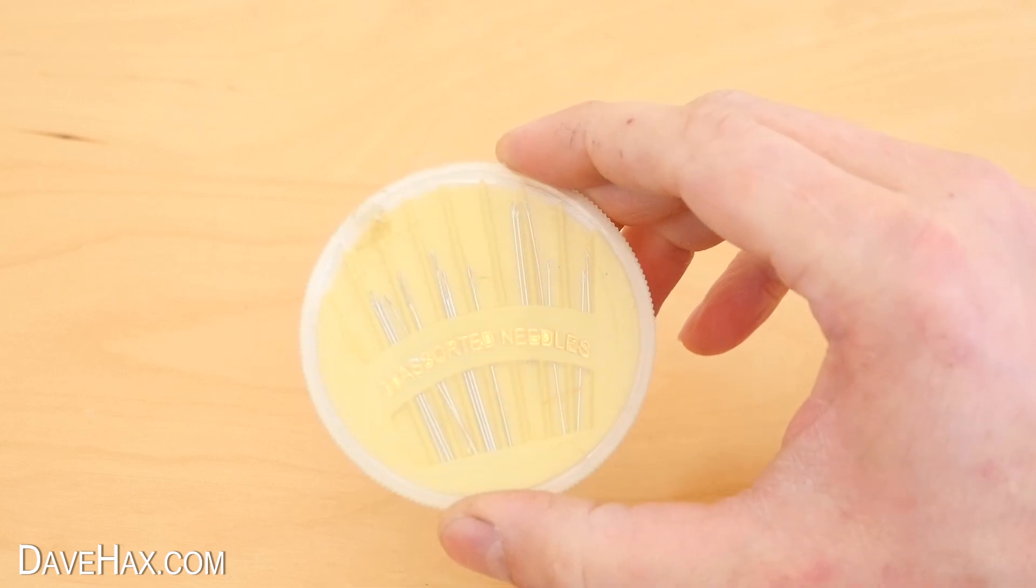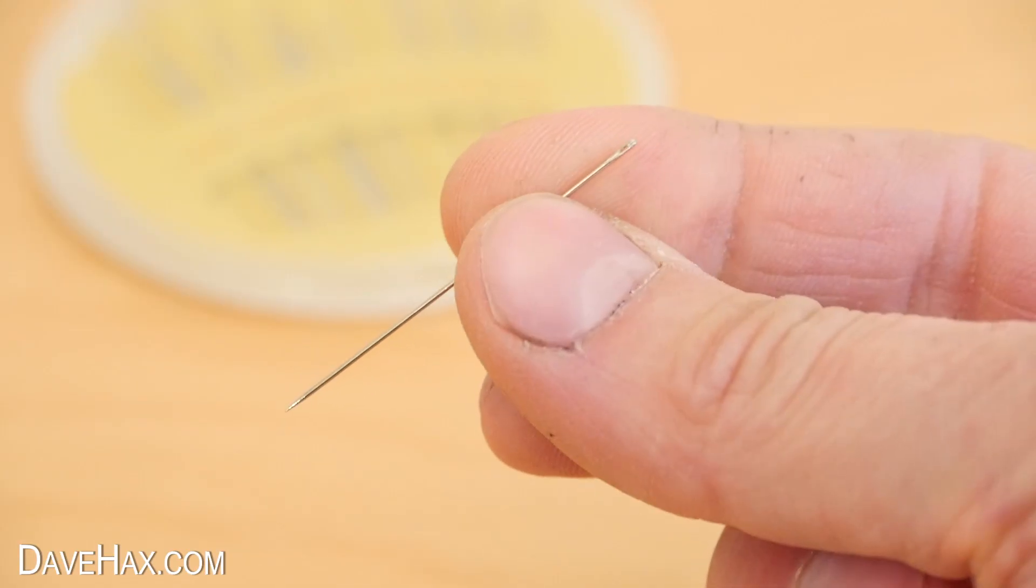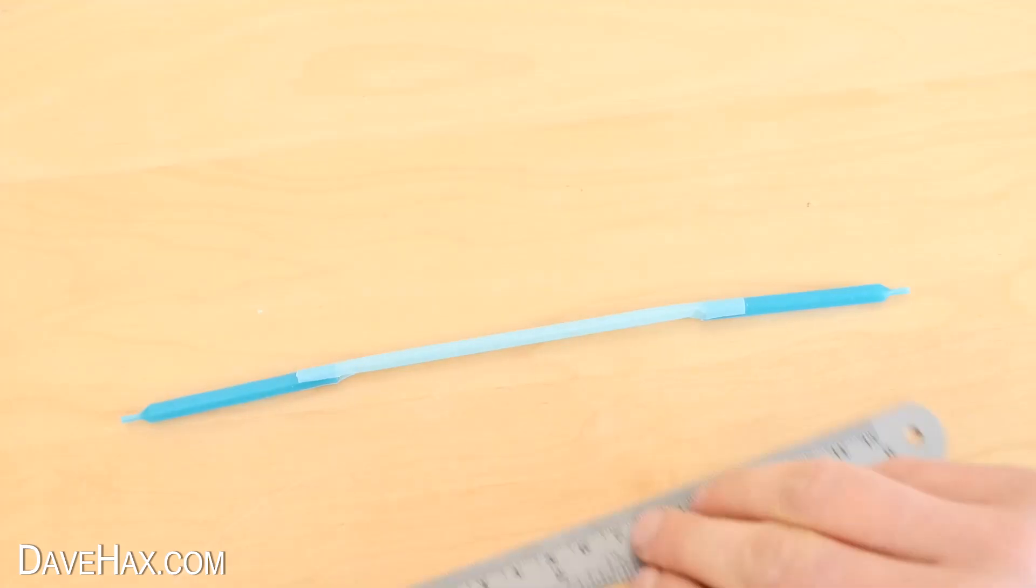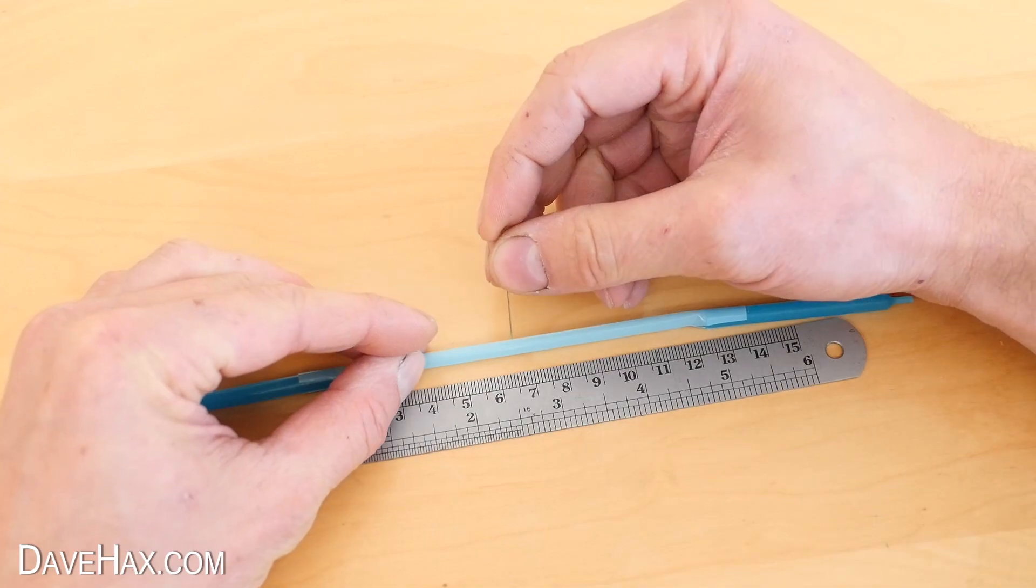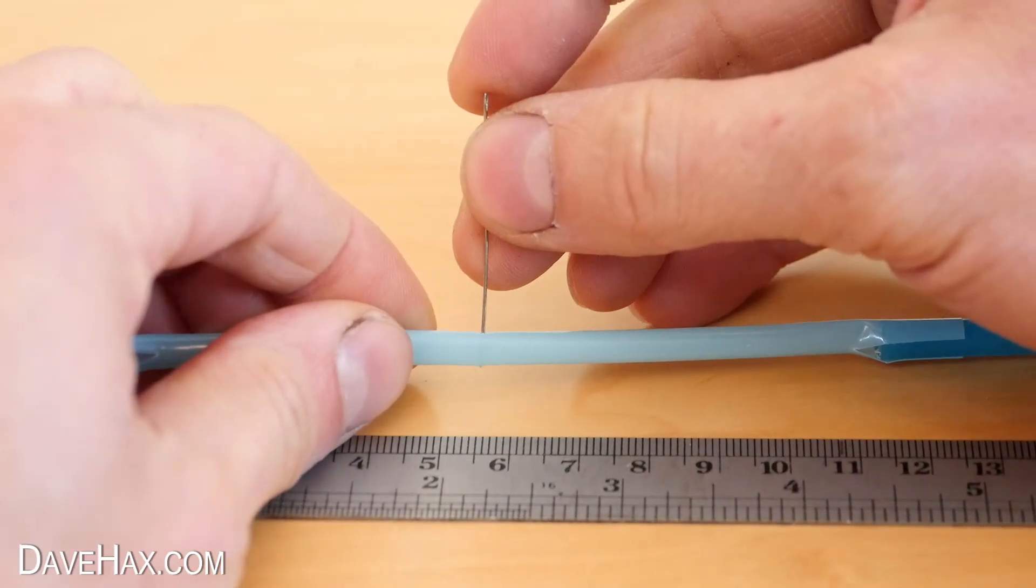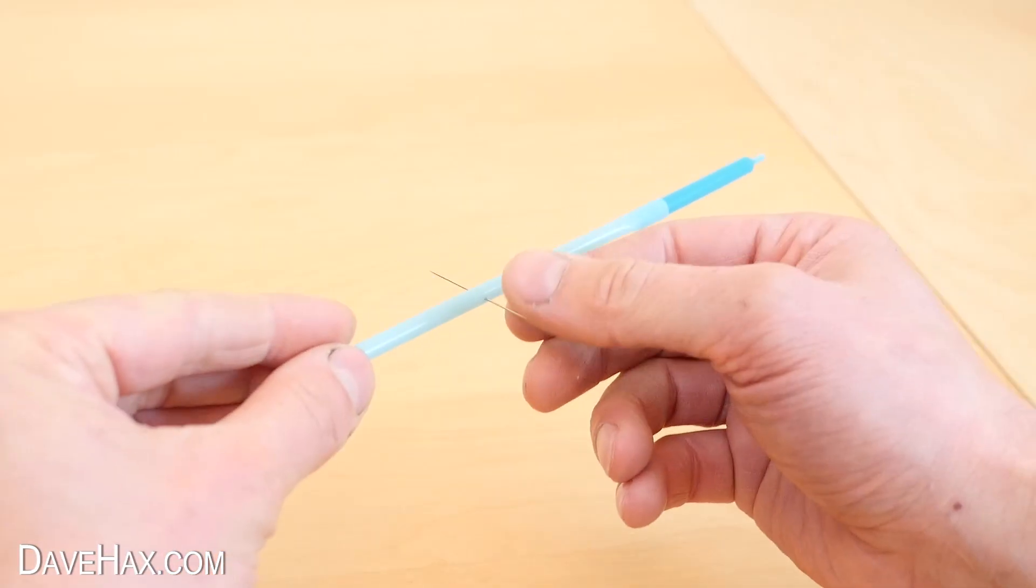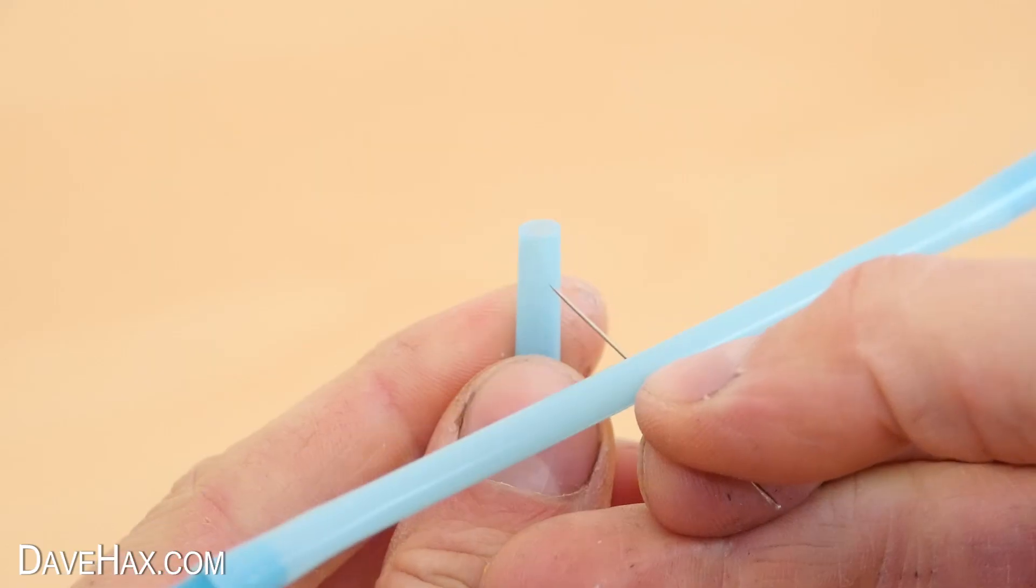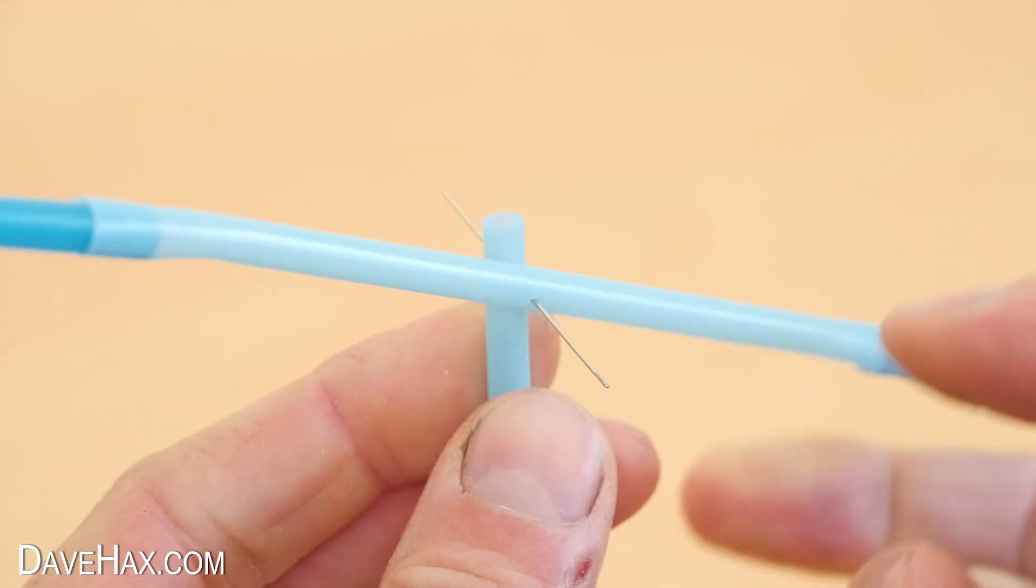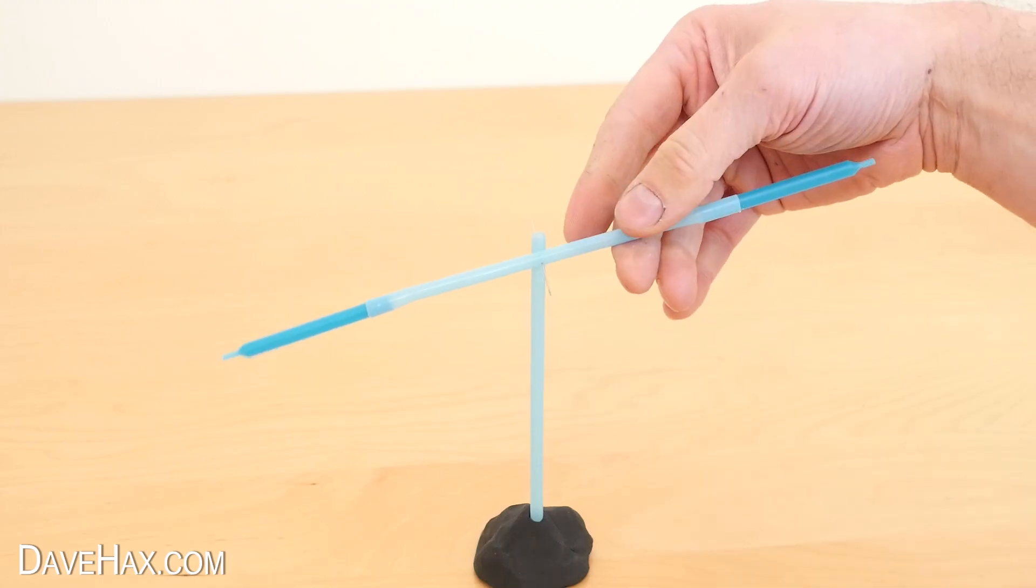Next I'm going to take a sewing needle. Measure the halfway point of the straw and push the needle through the center of the straw like this. Pin it to the top of the other straw, and there we have our candle seesaw.